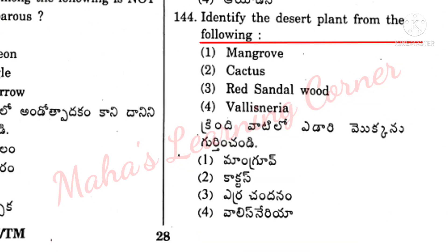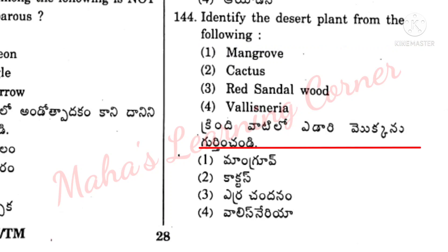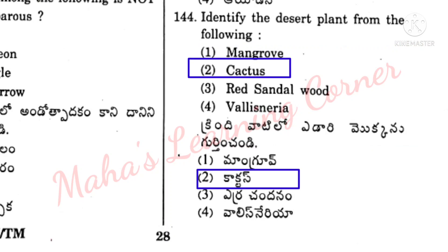Identify the desert plant from the following. Krindi vatil lho yadari mokkani guttin chandhi. Correct answer, Option 2: Cactus is the correct answer.